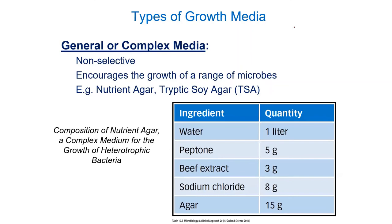Now let's talk about media — the food we're feeding these organisms. General or complex media like Terrific Broth or Nutrient Agar just gives organisms good, rich food — yeast extract or beef extract broken down mechanically and enzymatically to provide lots of amino acids and other nutrients. You often don't know exactly what's in it beyond the extract, but it works well for many organisms.